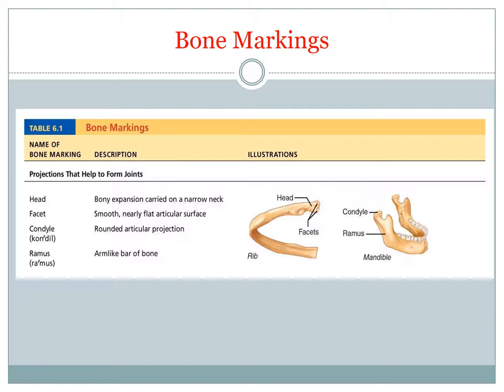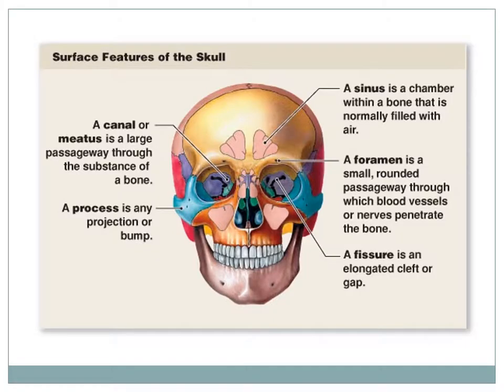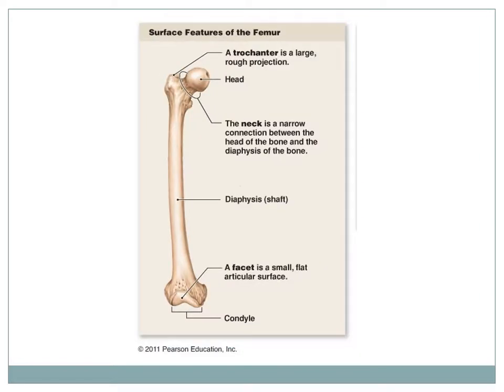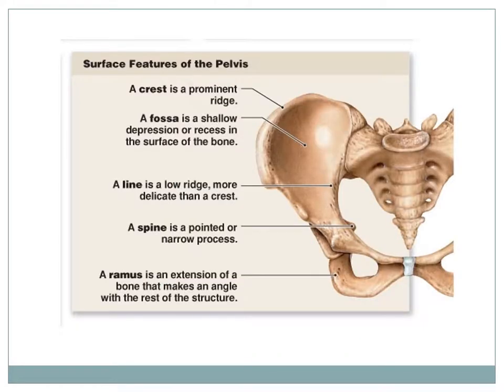Knowing the bone markings and their definitions will help you identify the various features and bone markings as you study the bones of both the axial and appendicular skeleton. Here are some examples of the various bone markings that we just talked about. For example, if you're looking for the foramen ovale, you know you're looking for a round or oval opening through a bone, so it can help you identify the bone marking that you're looking for. Other bone markings like a crest and fossa are shown here as well.